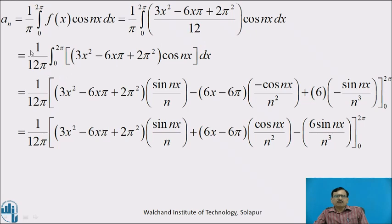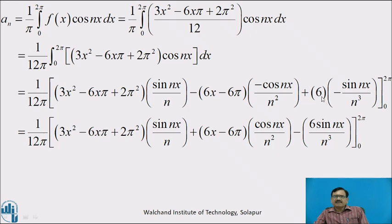Here we apply the generalized rule of integration by parts, taking u = (3x² − 6xπ + 2π²) and v = cos nx. This gives (1/12π): keeping u as is, integration of cos nx is sin nx / n; minus derivative of u which is (6x − 6π), times integration of sin nx / n which is −cos nx / n²; plus derivative of (6x − 6π) which is 6, times integration of (−cos nx / n²) which is −sin nx / n³. With limits 0 to 2π.